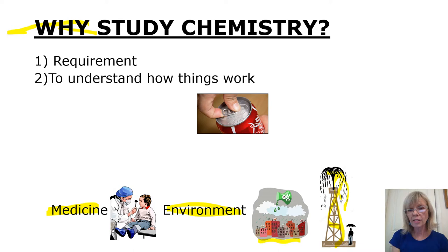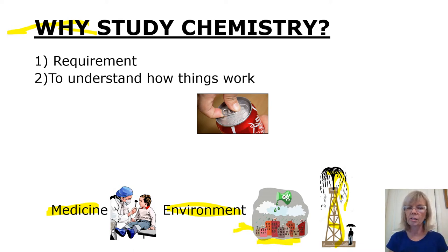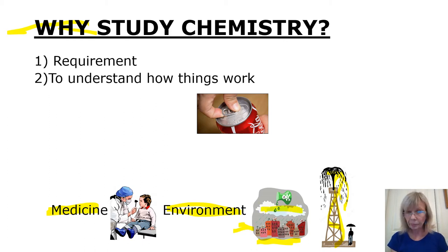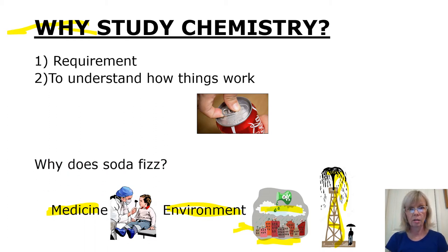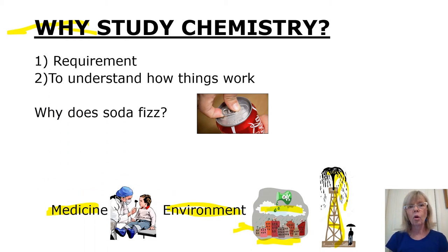We'll also learn about acid rain. How acid rain works is our factories and cars give off air pollutants. When it rains, the water reacts with these chemicals and forms acidic components — that's hence why it's called acid rain. We're also going to learn about things in our everyday life explained by chemistry.